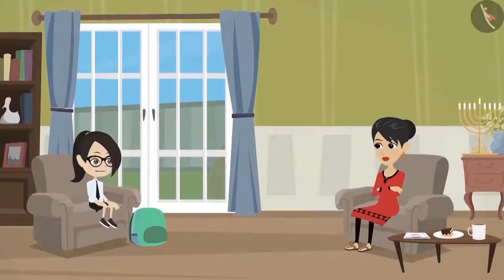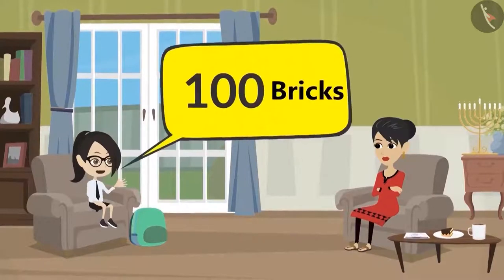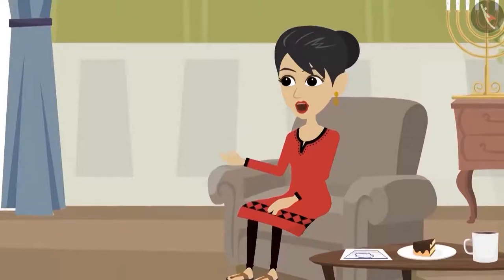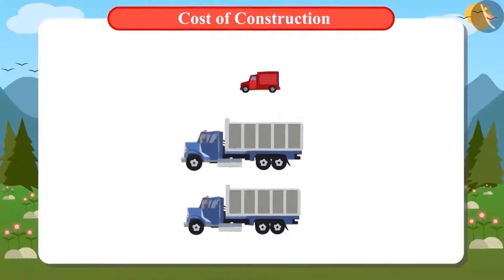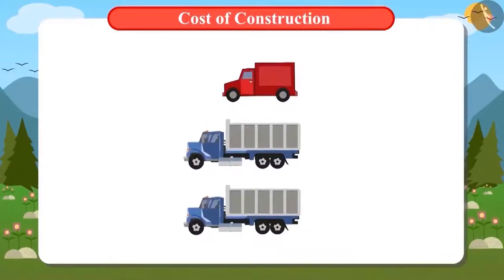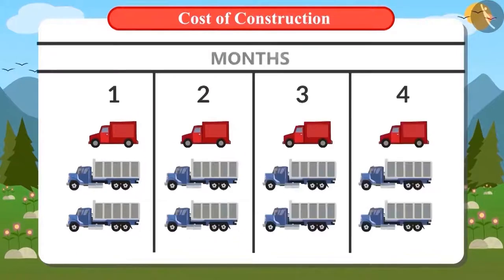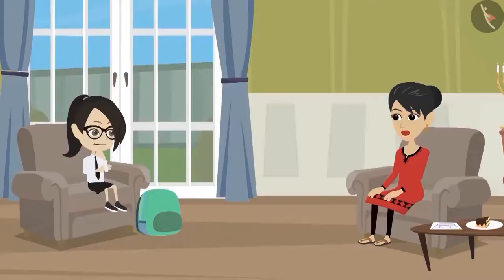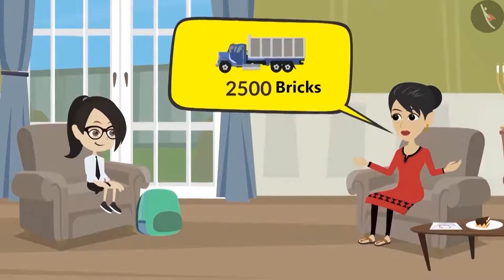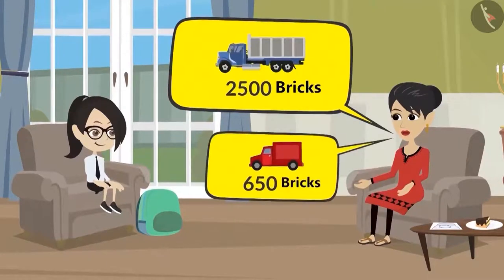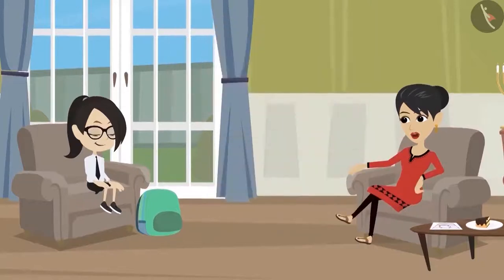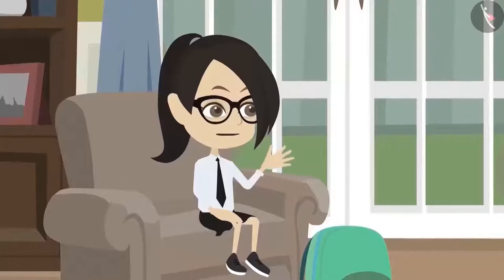Vandana tells mummy that 9 trucks are not enough — 100 more bricks need to be purchased another way. Mummy explains: 'We will not just buy bricks in big trucks. Every month we will purchase 2 big trucks and 1 small truck full of bricks, so we will buy all the bricks in 4 months.' A big truck holds 2,500 bricks and a small truck holds 650 bricks. If you look at the calculation yourself, you will see that all the bricks will arrive in 4 months.